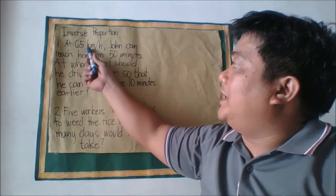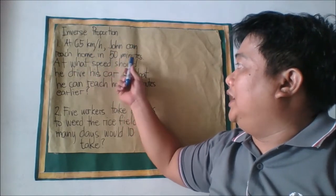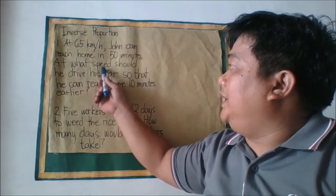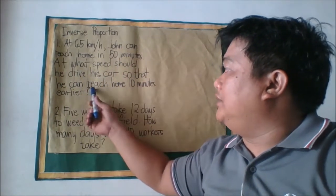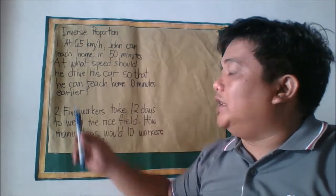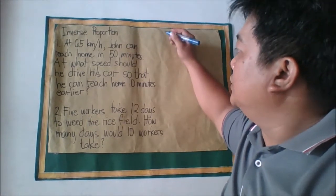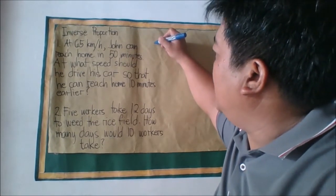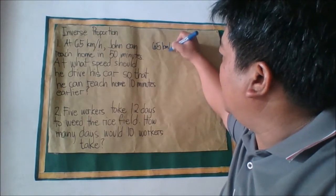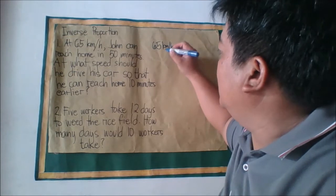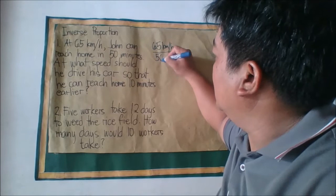Traveling at 65 kilometers per hour, John can reach home in 50 minutes. At what speed should he drive so that he can reach home 10 minutes earlier? First, identify the ratio: the first ratio is 65 km/h to 50 minutes.